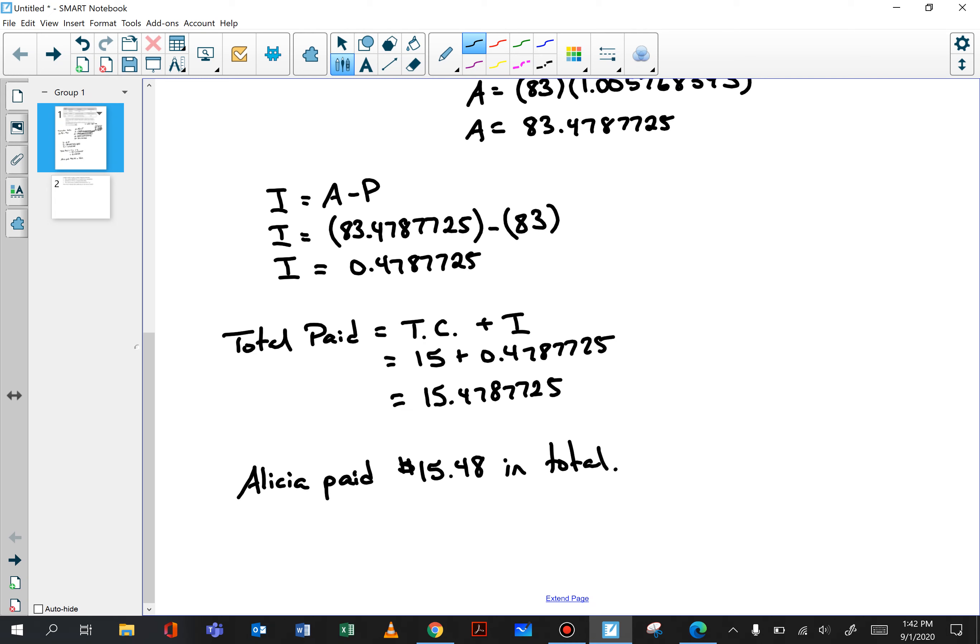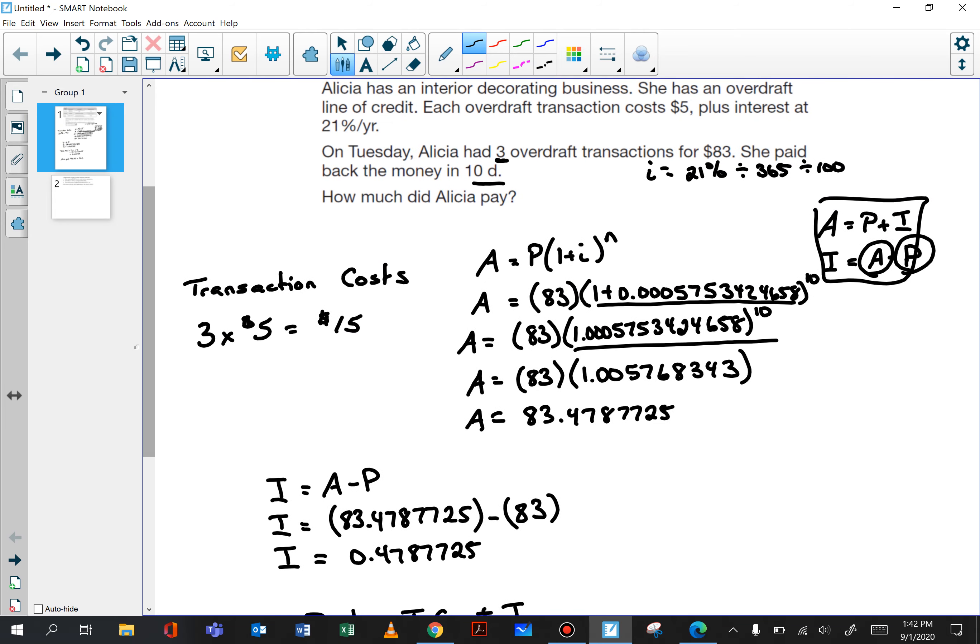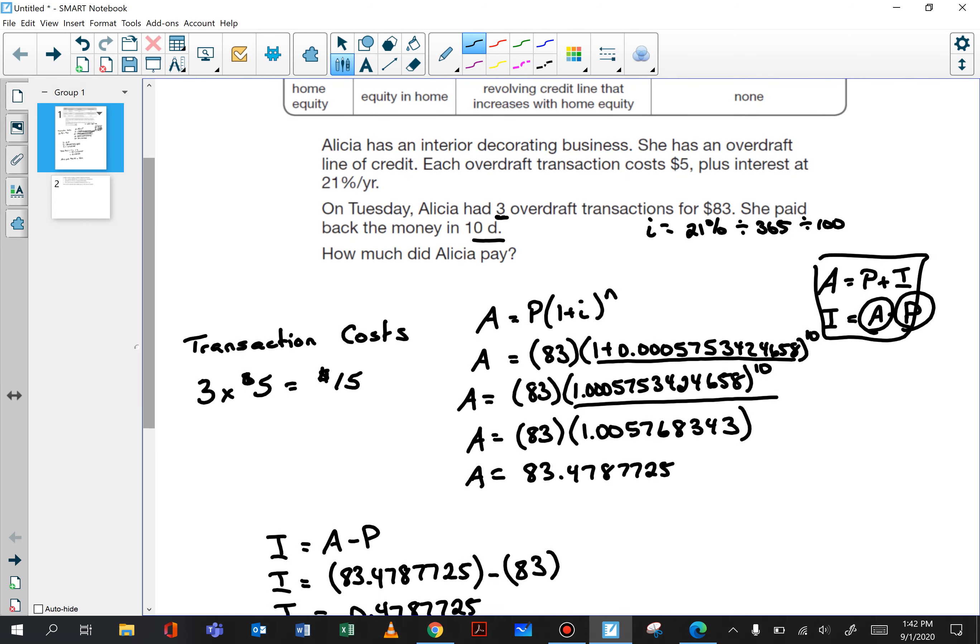Two-part question then, we had to figure out what the transaction costs were first. Three transactions $5 each total of 15 and then we had to use the compound interest formula to determine what the amount of interest was that was paid.